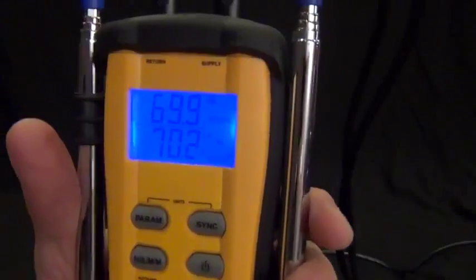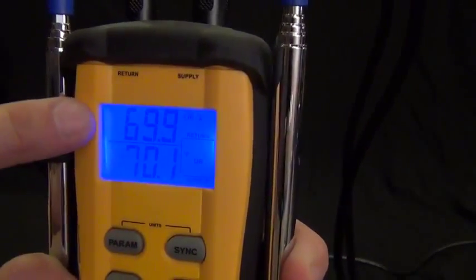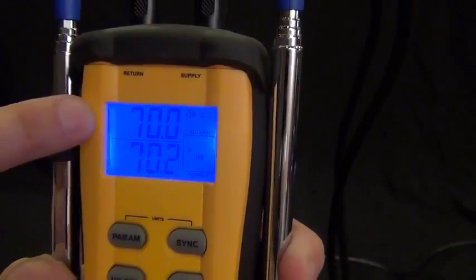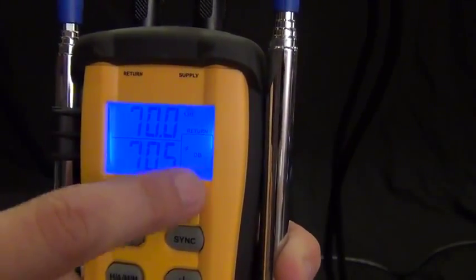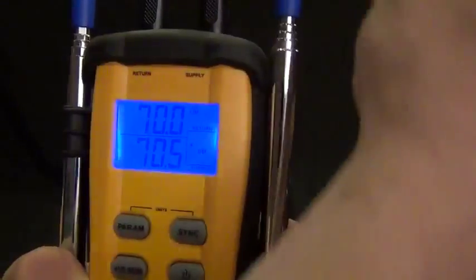So let's just kind of go over the display and check that out. So right now I'm just in the dry bulb mode measuring 70 degrees on the return and 70 degrees on the supply just because they're in the same room.